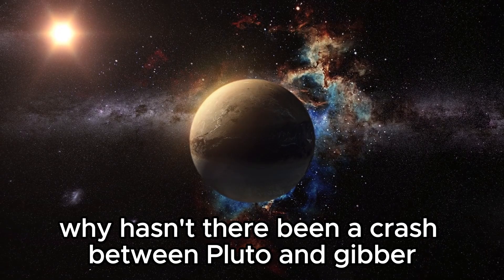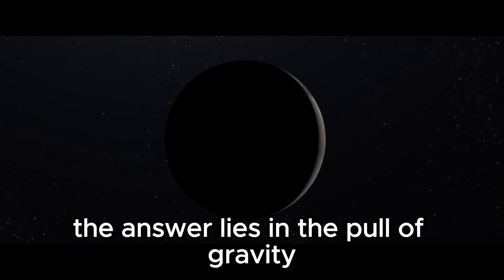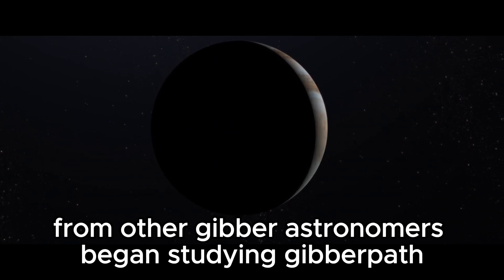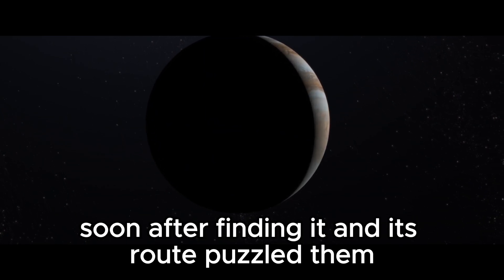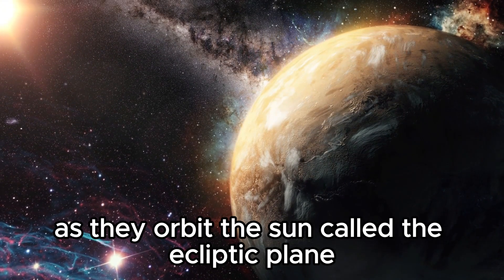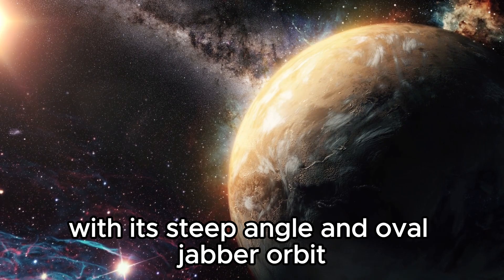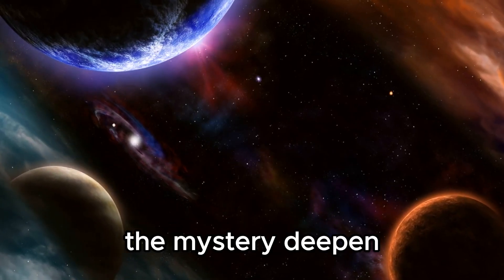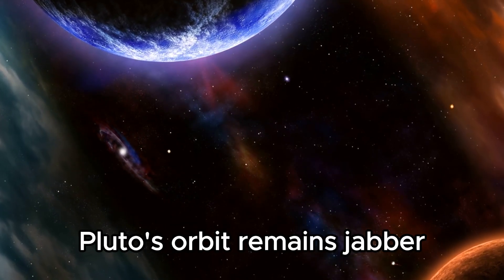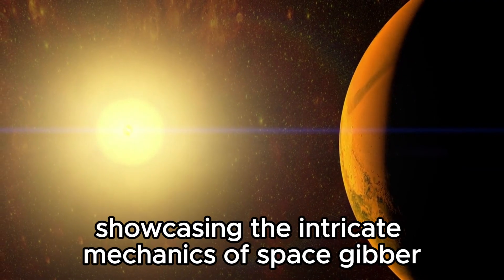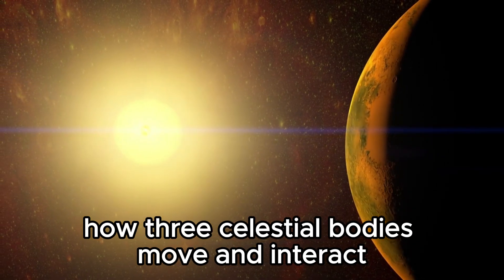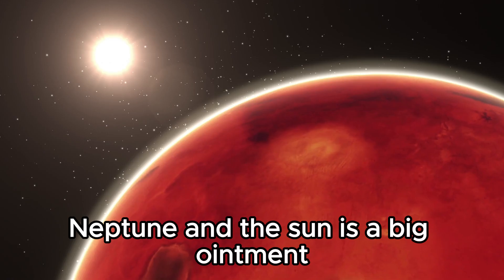The question arises, why hasn't there been a crash between Pluto and Neptune? The answer lies in the pull of gravity from other planets. Astronomers began studying Pluto's path soon after finding it, and its route puzzled them. Unlike most planets that stick close to the same plane as they orbit the sun called the ecliptic plane, Pluto stands out with its steep angle and oval orbit. The mystery deepened when they realized Pluto's path crossed Neptune's. Despite these complexities, Pluto's orbit remains stable, showcasing the intricate mechanics of space.